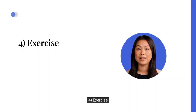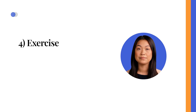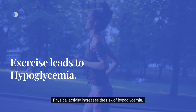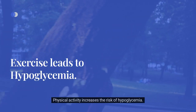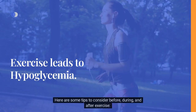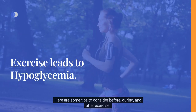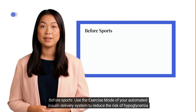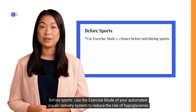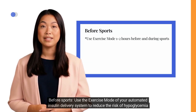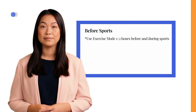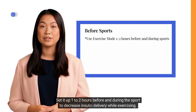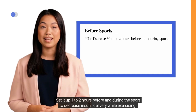4. Exercise. Physical activity increases the risk of hypoglycemia. Before sports, use the exercise mode of your automated insulin delivery system to reduce the risk of hypoglycemia during planned activities. Set it up 1 to 2 hours before and during the sport to decrease insulin delivery while exercising.